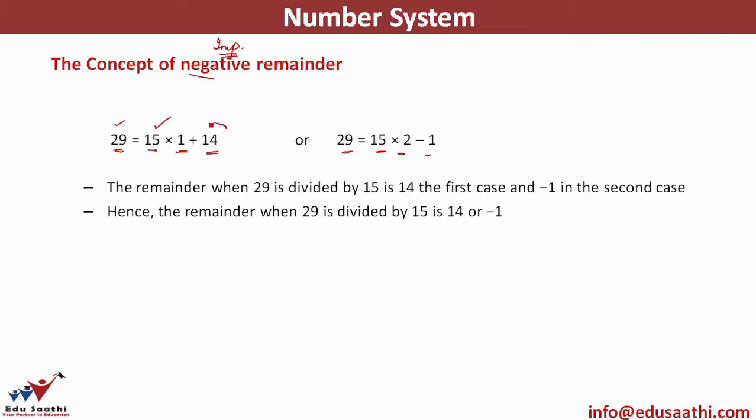That means this remainder plus 14 and this remainder minus 1, I can say these are the same thing. So when 29 is divided by 15, the remainder is coming out to be plus 14 in the first case and minus 1 in the second case. So the remainder, when 29 is divided by 15, either I can say it as plus 14 or I can say it as minus 1. So a negative remainder can always be written as a positive remainder and a positive remainder can always be written as a negative remainder.